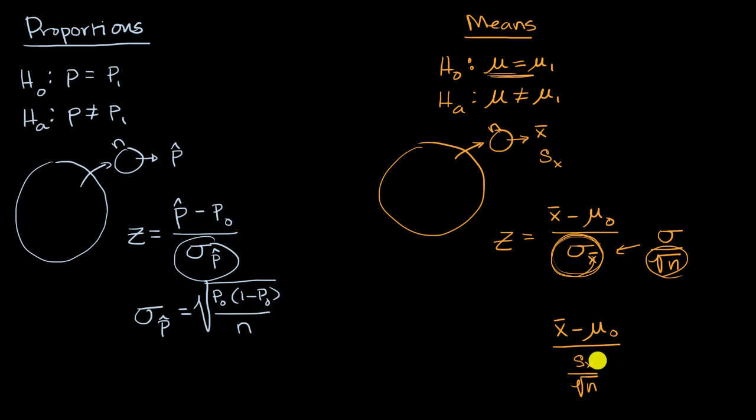But because this is an estimate, we actually get a better result. Instead of saying this is an estimate of our z-statistic, we will call this our t-statistic. And as we'll see, we will then look this up in a t-table, and this will give us a better sense of the probability.